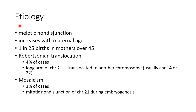Now let us see about the etiology of Down syndrome. Trisomy 21 accounts for 95% of cases of Down syndrome. It is usually caused due to meiotic non-disjunction. The incidence increases with maternal age — it occurs in 1 in 25 births in mothers over the age of 45 years.